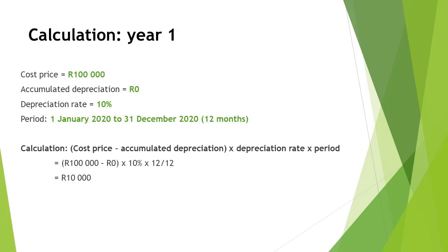In order to calculate the depreciation on the vehicle, you will need to use the following: the cost price, accumulated depreciation, depreciation rate, and the period. In our example, the cost price is given as R100,000. Since the vehicle was purchased on 1 January 2020 and we are calculating the depreciation for the first year, the accumulated depreciation on this vehicle is still R0. The depreciation rate is given as 10% and the period is 1 January 2020 to 31 December 2020, thus 12 months.